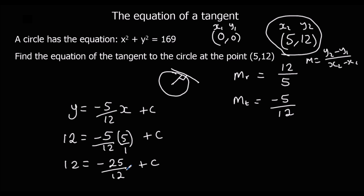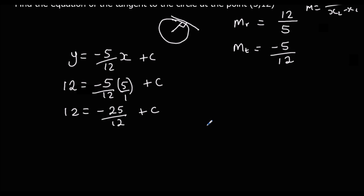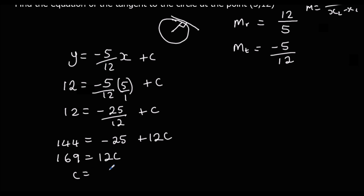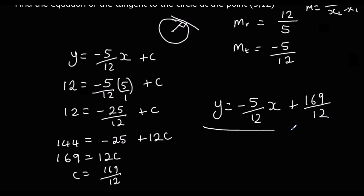To solve for c, the easiest approach is to multiply everything by 12 to clear the fraction. That gives 144 equals -25 plus 12c. Adding 25 to both sides: 169 equals 12c, so c equals 169/12. Therefore the equation of the tangent is y equals -5/12 x plus 169/12. That's the equation of the tangent.